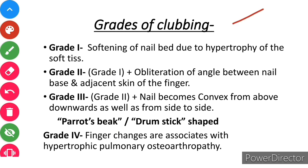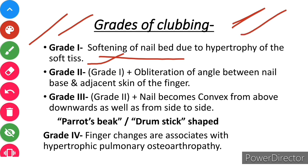The last subheading is grades of clubbing. There are four grades. First the definition, then causes of clubbing, and last the grades of clubbing. In grade one there is softening of the nail bed due to hypertrophy of the soft tissue — soft tissue hypertrophy and edema.